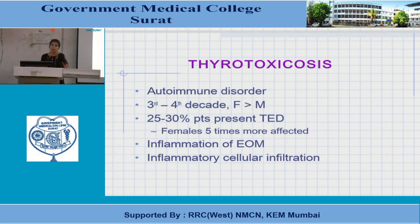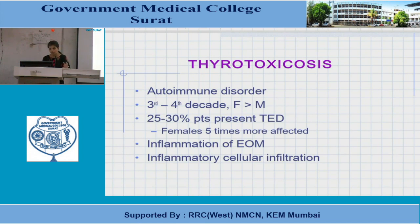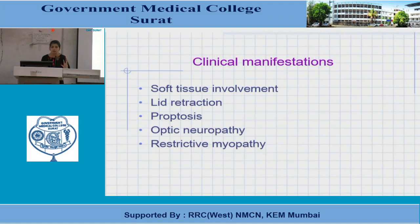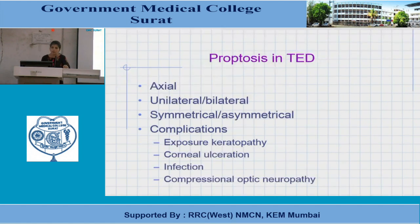Thyroid associated orbitopathy is an autoimmune disorder, most common in females — eight times more than males — typically in the third or fourth decade. It involves inflammation and thickening of the extraocular muscles, sparing the tendon, with mainly belly involvement due to glycosaminoglycan infiltration. Clinical manifestations include proptosis, lid retraction, optic neuropathy, and in the long term, fibrosis leading to restrictive myopathy. The proptosis is axial and can be unilateral or bilateral.